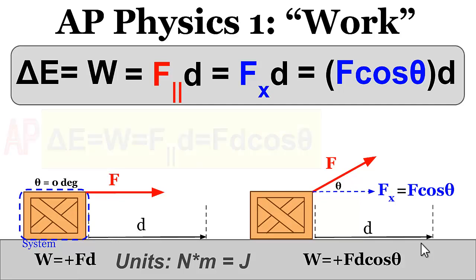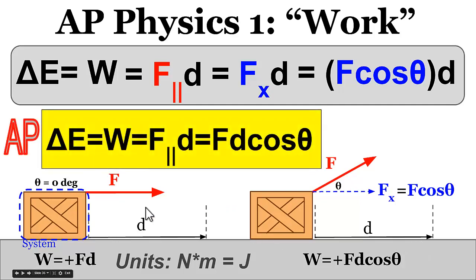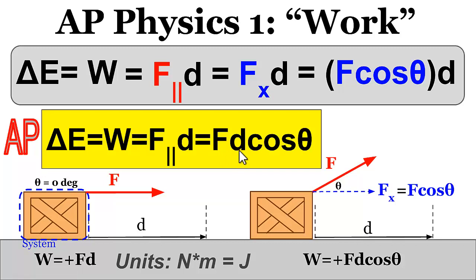On your AP Physics 1 equation sheet, you're given that the change in energy equals the work done, which can be calculated by taking the parallel component of the force times the displacement. Or, in general for any situation — whether the force is parallel to the displacement or at an angle — it's just the force times the displacement times the cosine of theta.